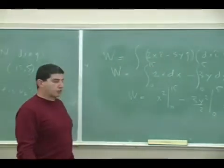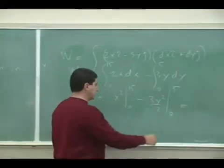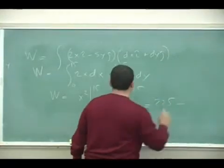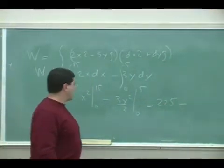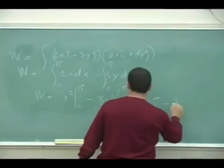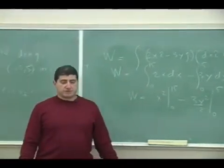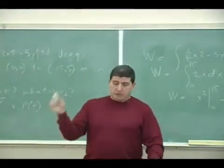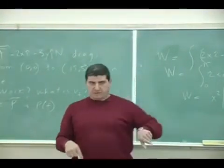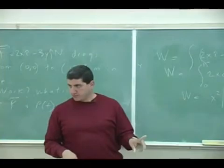So 5 times 15 squared is 225 minus 3 halves of 25. The Y component of the force is doing negative work, fighting against the X component of the force.